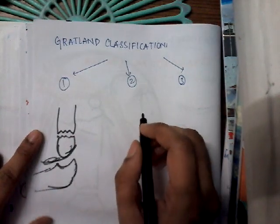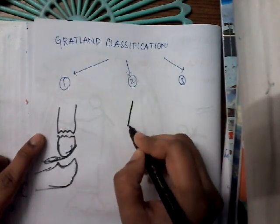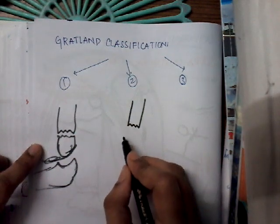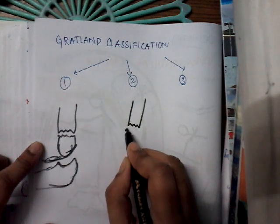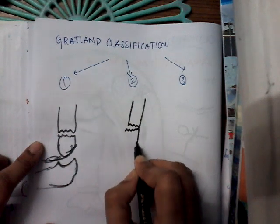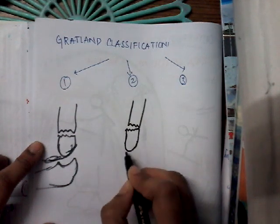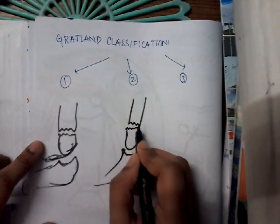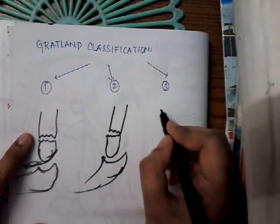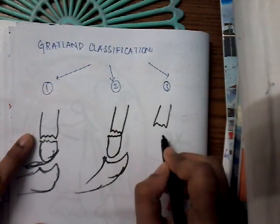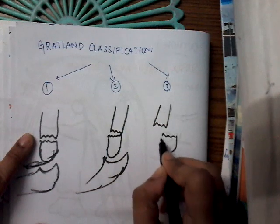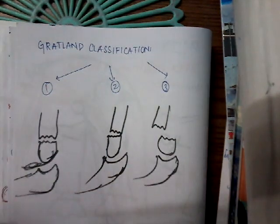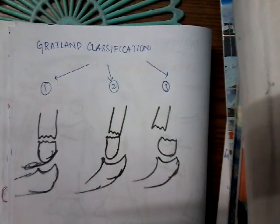In Type 2, there is displacement of the anterior cortex but the posterior hinge is not displaced. In Type 3, it is completely displaced — both anterior and posterior parts are displaced. These are the three types of Gartland classification.